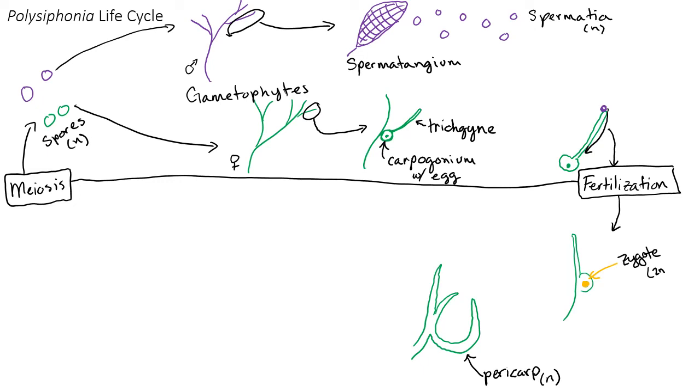Within the pericarp we have this funny structure. This is the carposporophyte. And some carposporangia. And those carposporangia are going to make carpospores, which are diploid by mitosis.